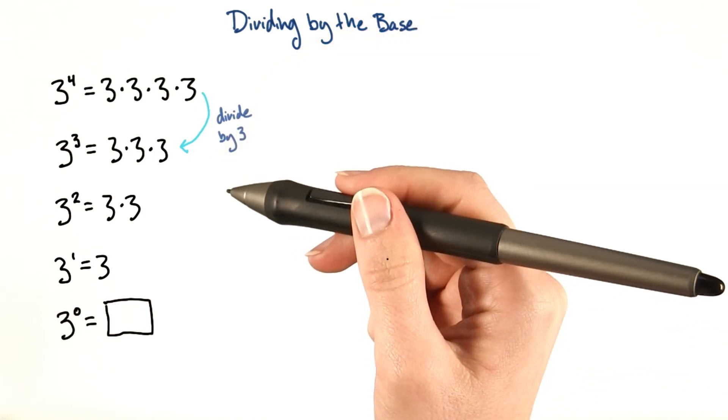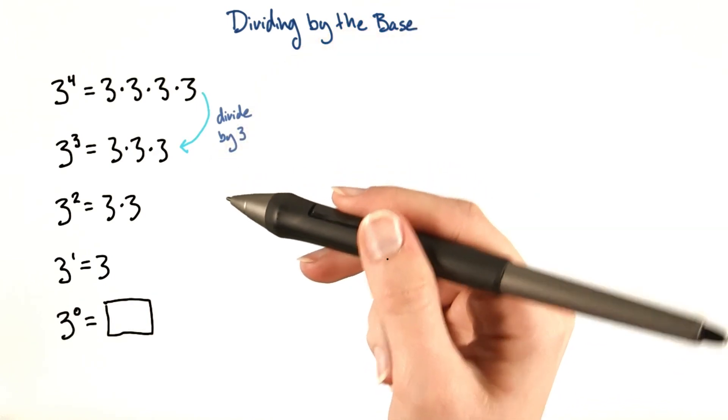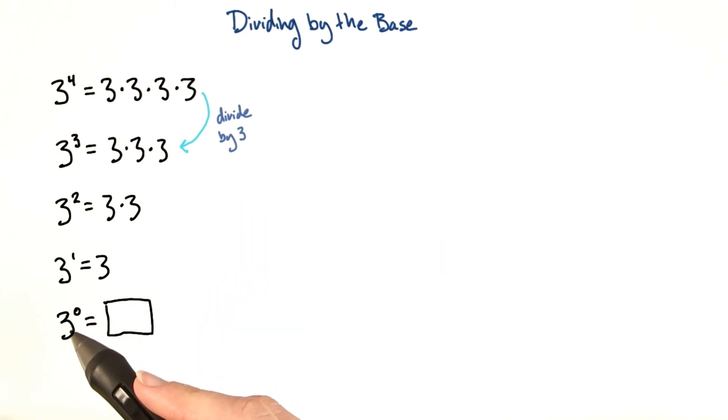So if we are dividing by the base every time we go down a power, what do you think 3 to the 0 is? Enter your answer here.